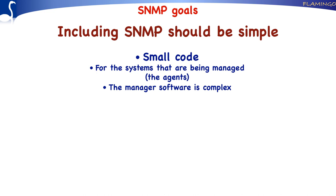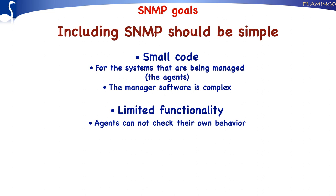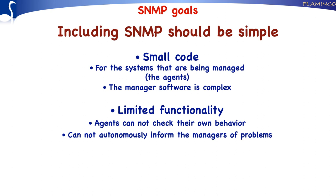Another consequence of the fact that SNMP is simple is that agents have limited functionality. For example, an agent is not able to check its own behavior. Therefore, if something goes wrong, it cannot, in an autonomic fashion, inform the manager of problems. This is quite different from OSI management, where agents had far more functionality. In the case of OSI management, it was possible that an agent autonomically informed the manager if something went wrong. With SNMP, this is not possible.